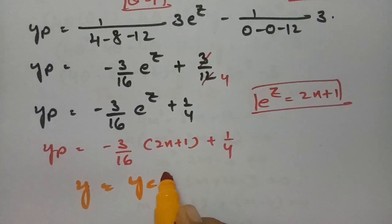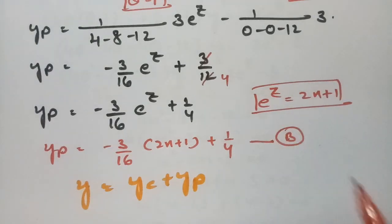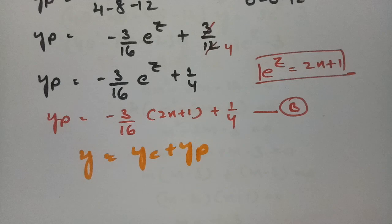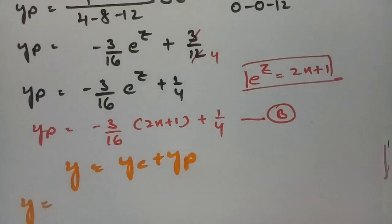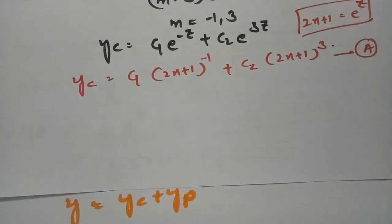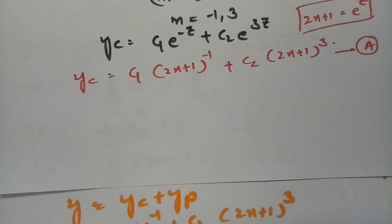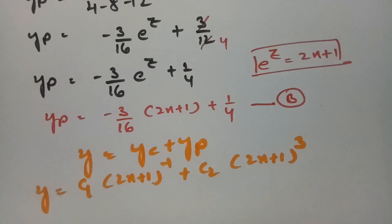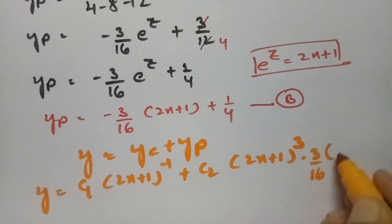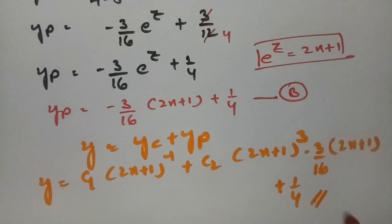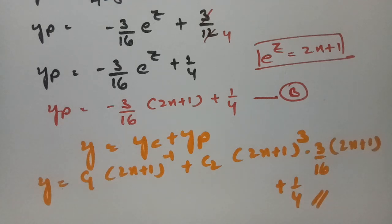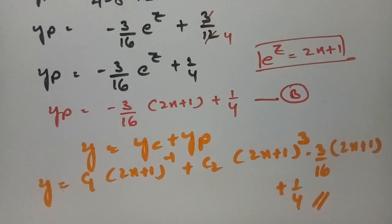The general solution is y = yc + yp. Combining equations (a) and (b): y = c1·(2x+1)^(-1) + c2·(2x+1)^3 - (3/16)·(2x+1) + 1/4. This is the general solution for this Legendre's equation. Please practice these problems — you can solve them on your own. These videos will be helpful for your preparation; please share with your friends. Thank you for your time and attention.